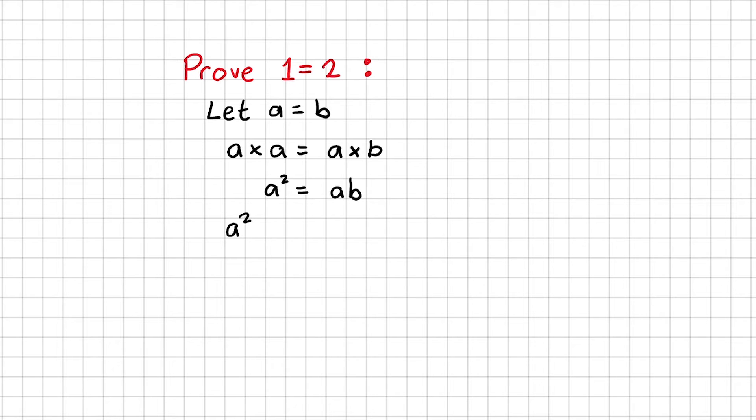I'm going to subtract the left-hand side by B squared. Whatever we do to the left-hand side, we've got to do to the right-hand side. I can factorize the left-hand side, so now it's equal to A plus B times A minus B. I'll take the common factor out on the right-hand side so that it becomes B times A minus B.